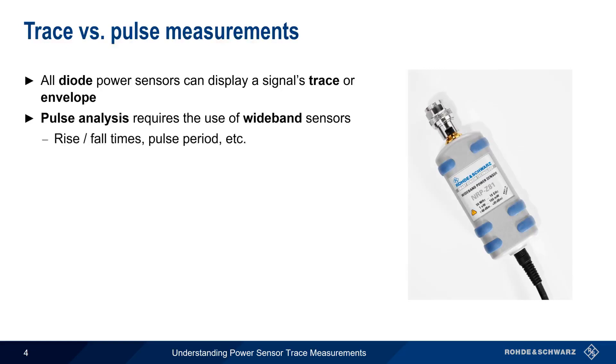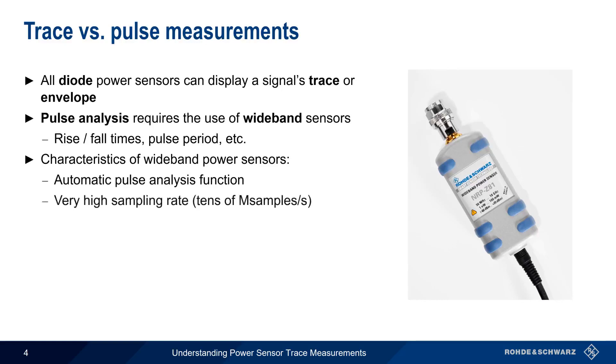By pulse analysis, we mean things like pulse rise time and fall time, pulse period, etc. The characteristics of wideband power sensors are somewhat different than those of other sensor types. As mentioned, wideband power sensors support an automatic pulse analysis function. They also have a very high sampling rate, usually tens of millions of samples per second, which gives them a time resolution in the low tens of nanoseconds.